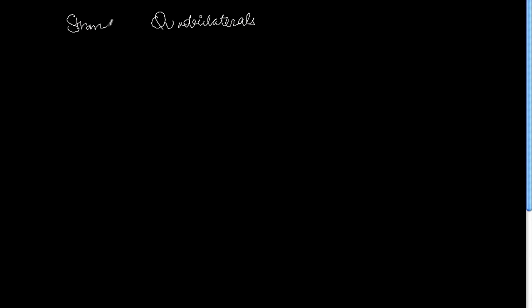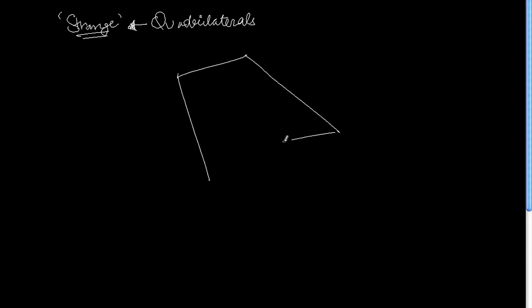What I'm going to tell you is how to find the area of strange quadrilaterals. There is a specific type called strange quadrilaterals, and these quadrilaterals can be in any shape, except that they are four-sided of course.